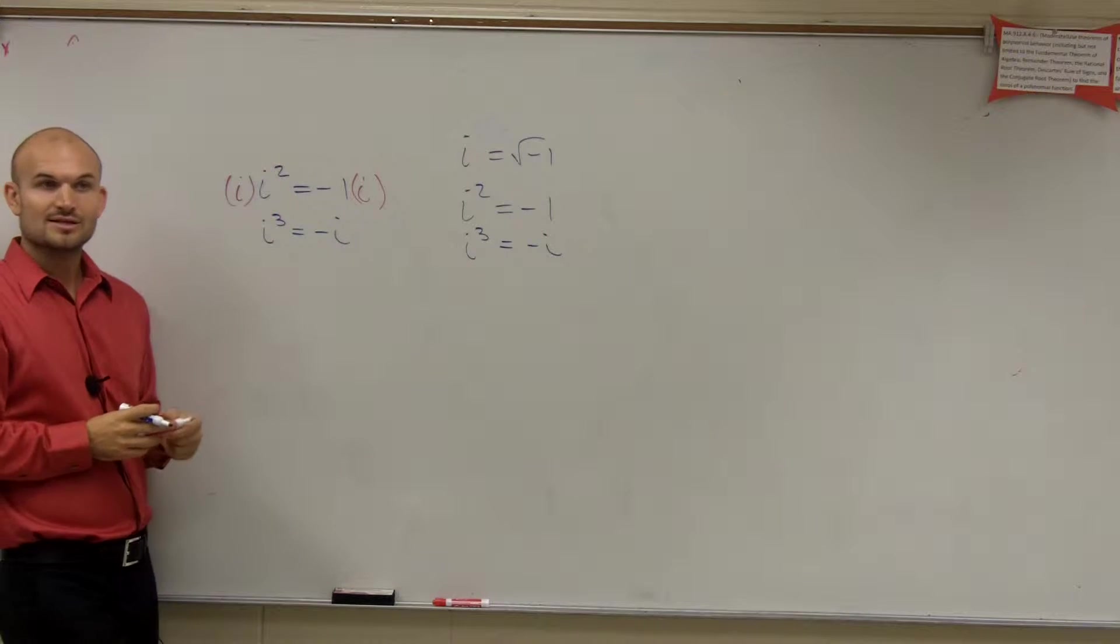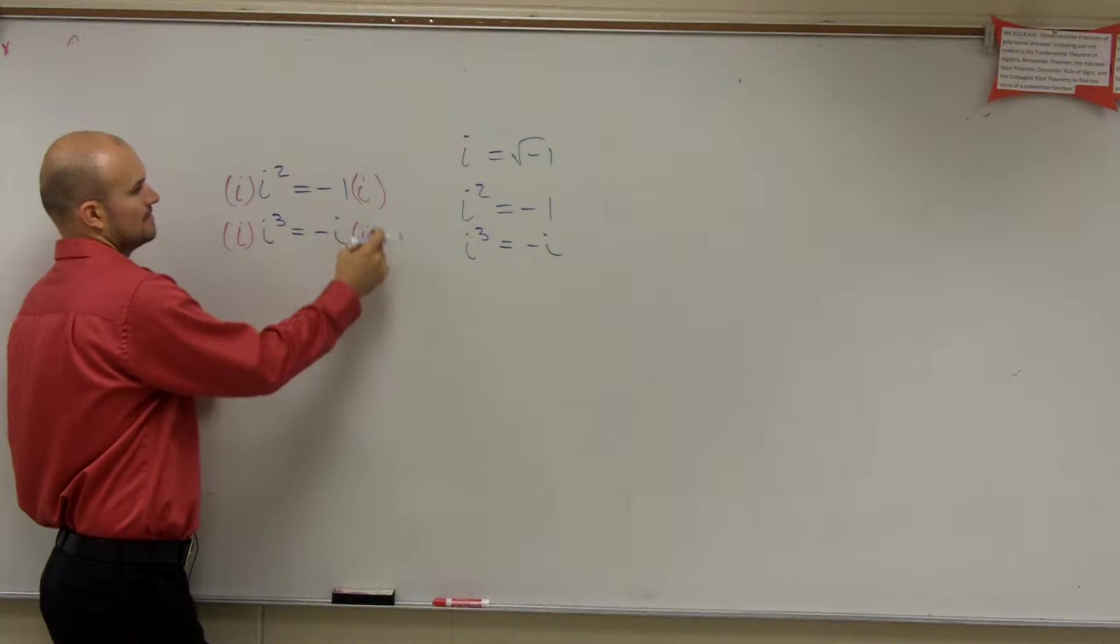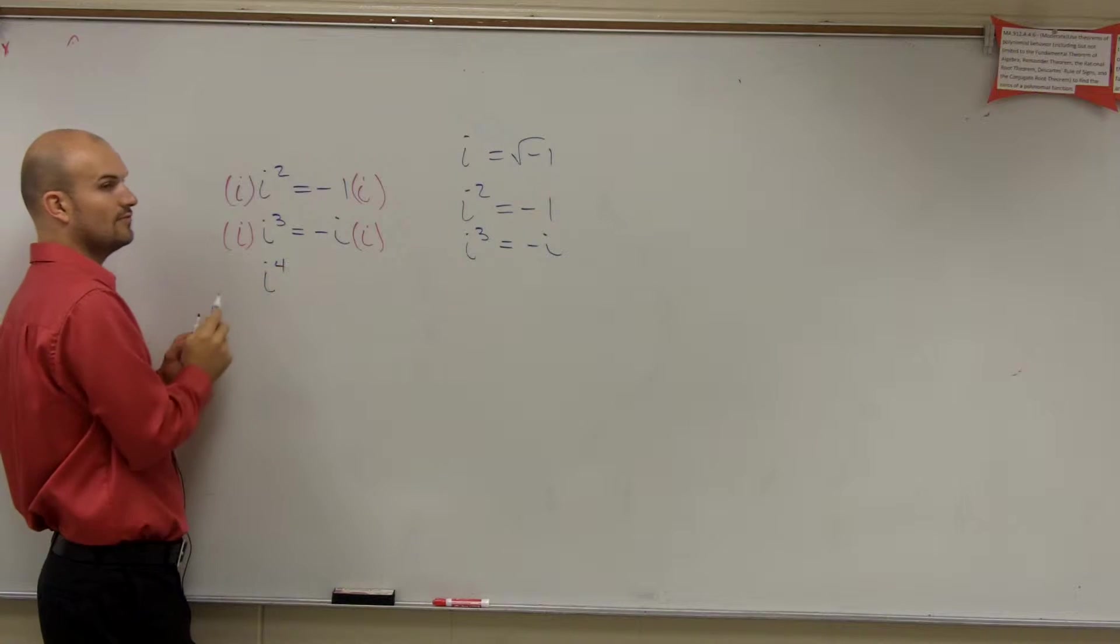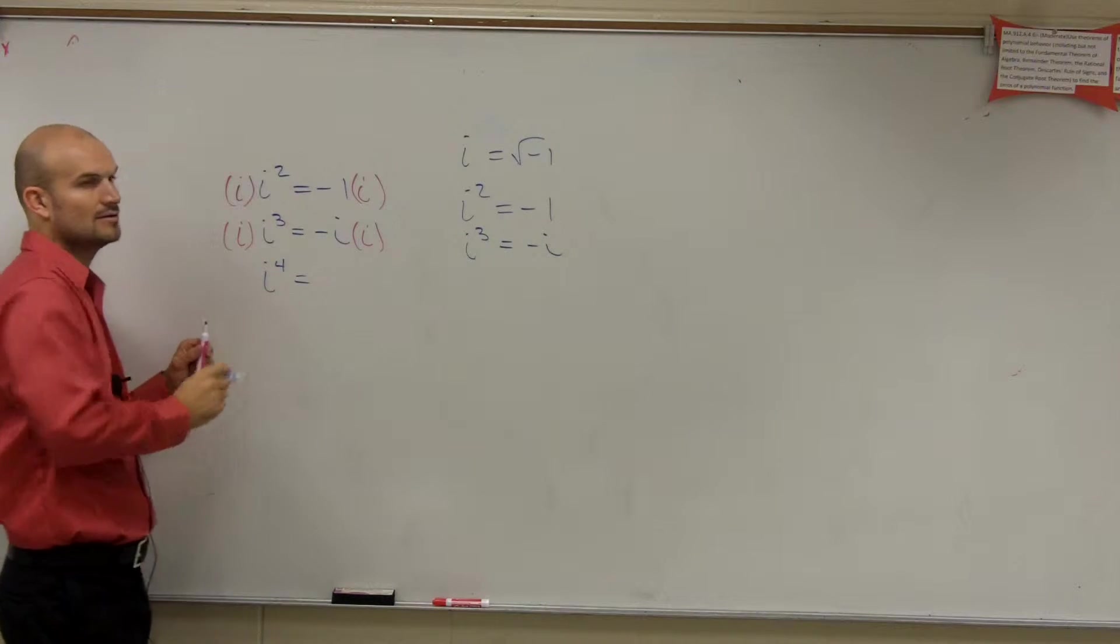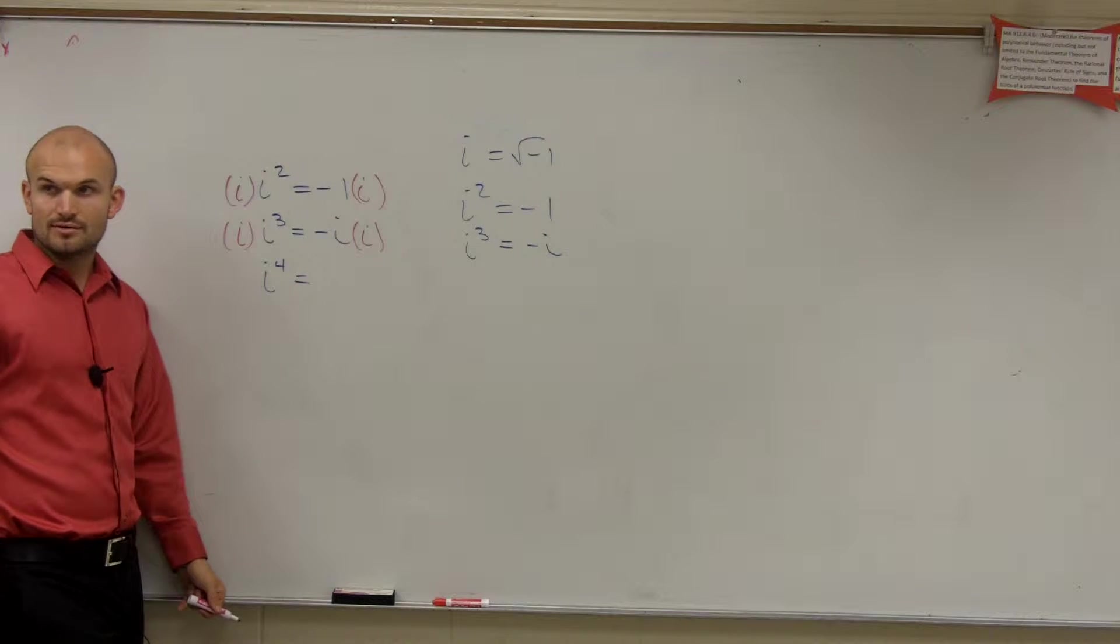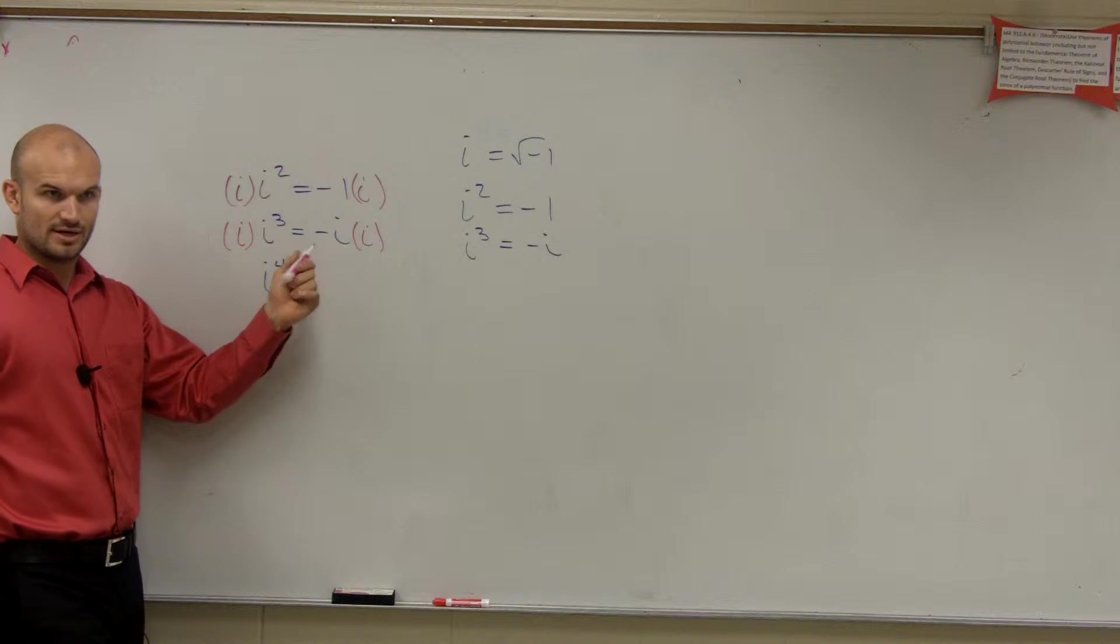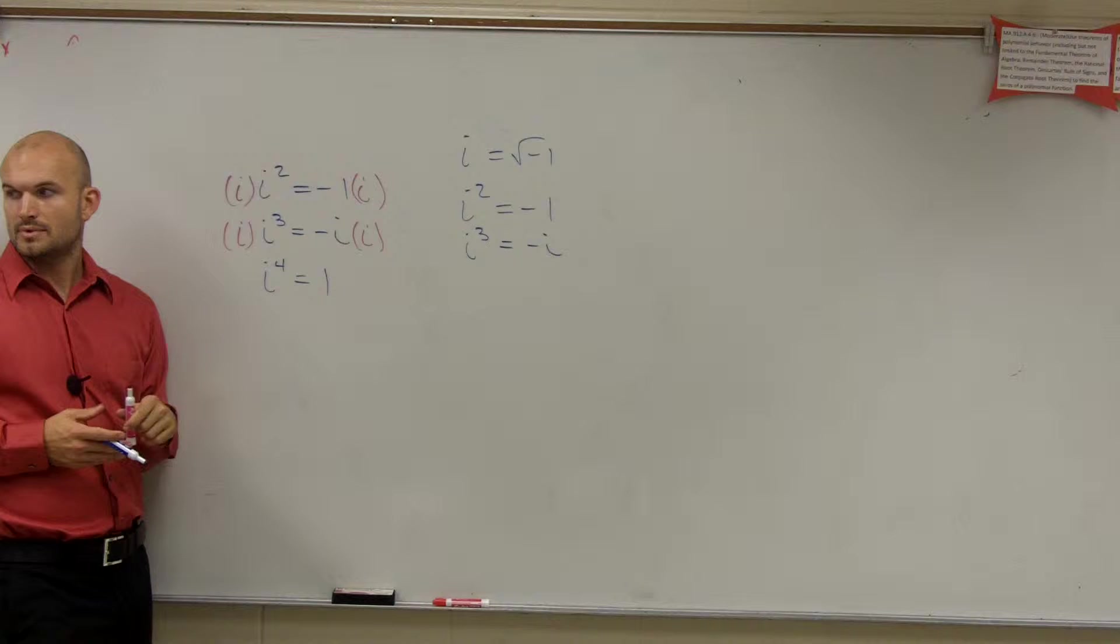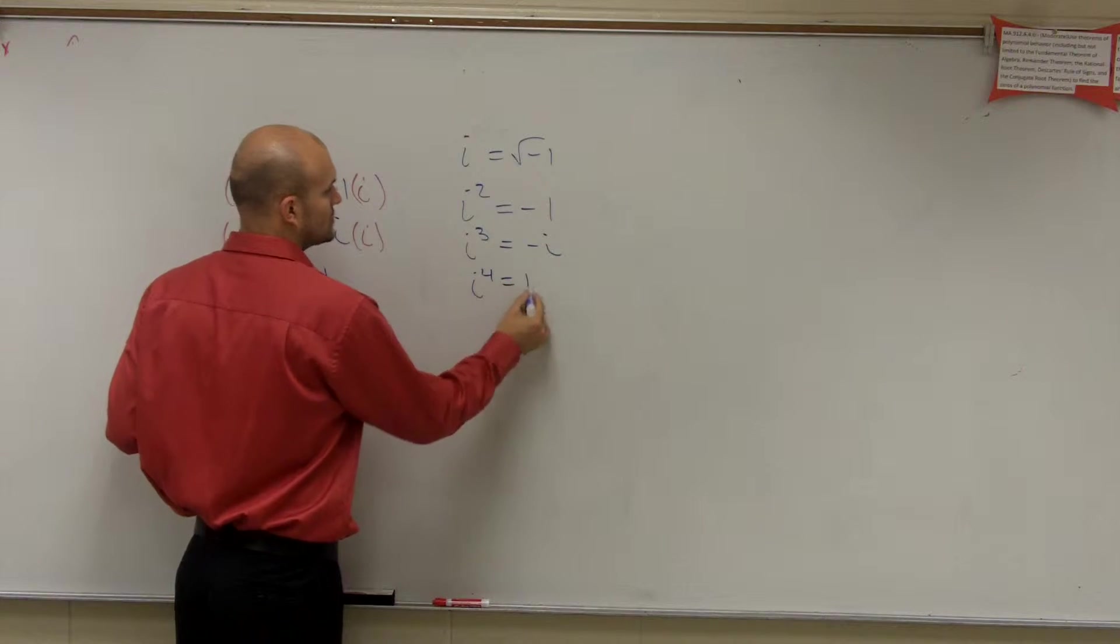Now, let's have fun again, let's do the next one. i times i cubed is i to the fourth, right? Equals negative i times i. Well, i times i is i squared, which is negative 1. Negative 1 times this other negative 1 is now going to give me positive 1, got it? So we can say i to the fourth equals 1.